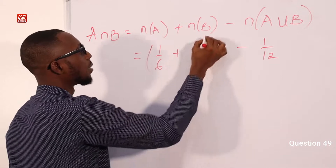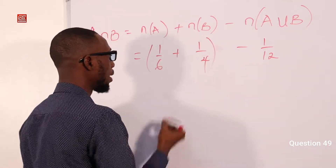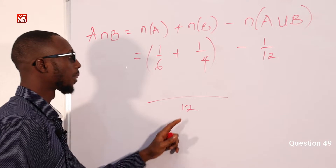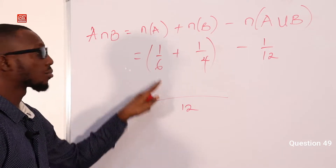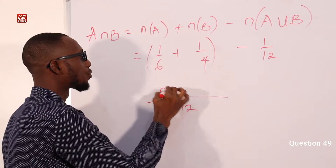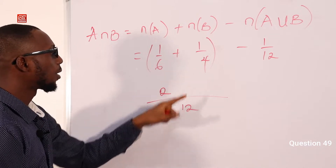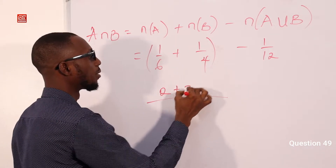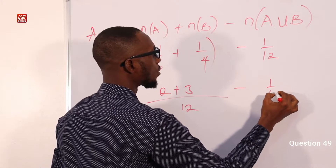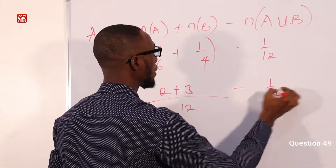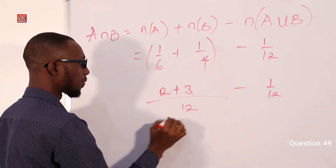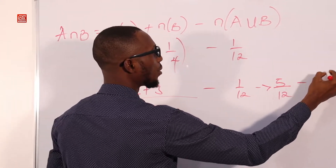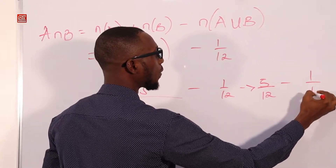I can take it all together. I can have 12 as the common denominator. 6 in 12 is 2, times 1 gives 2. 4 in 12 is 3, times 1 gives 3. Minus 1 over 12. So this implies 2 plus 3 is 5. I have 5 over 12 minus 1 over 12.